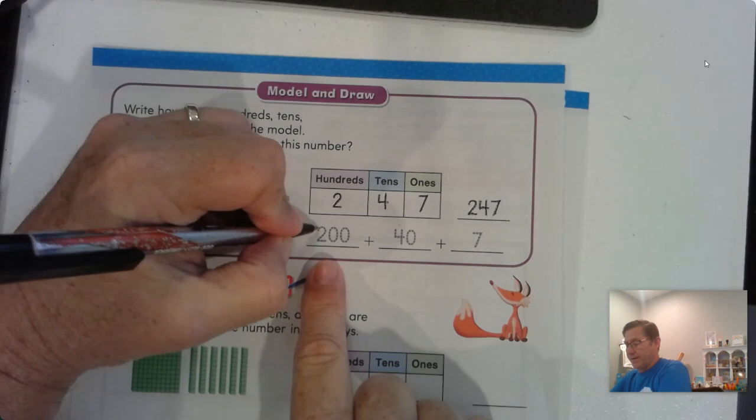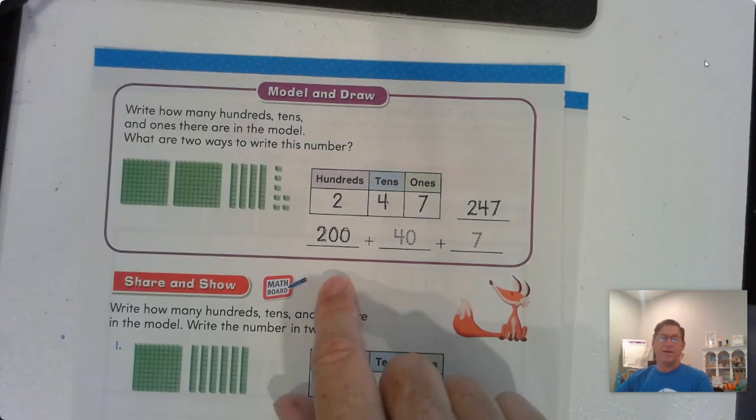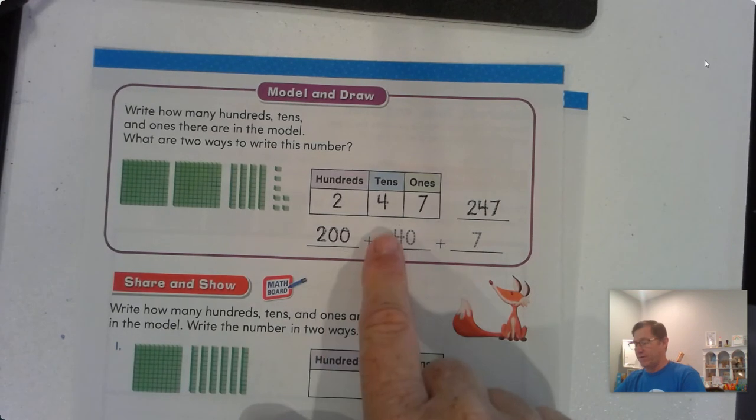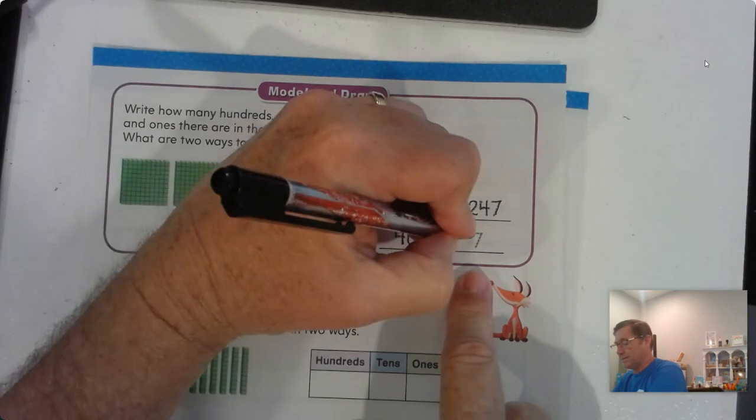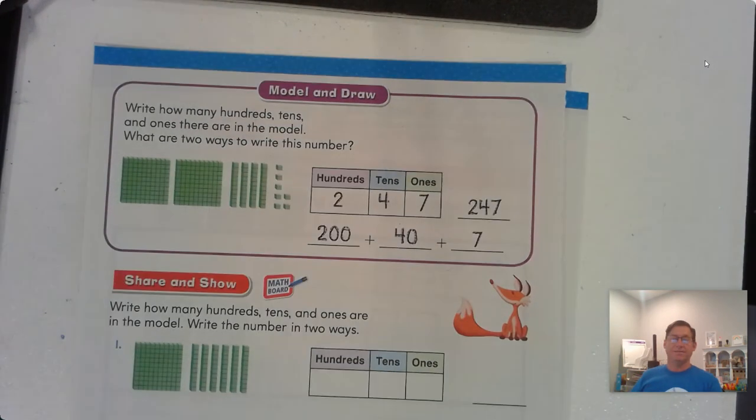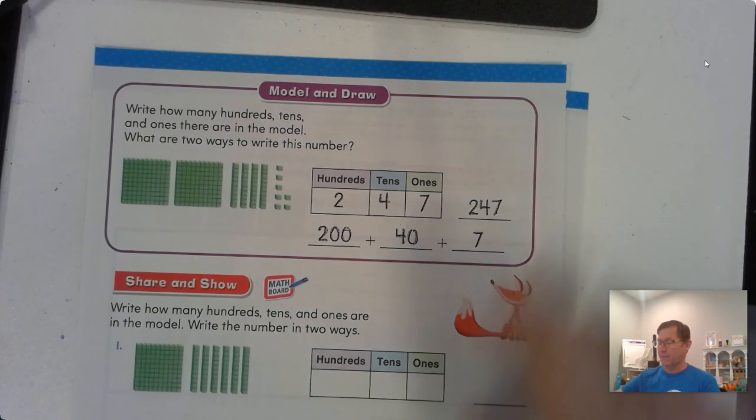We could also break it apart by its place value. How many hundred blocks did we have? We had 2, so that's 200. We had 4 tens, which would be 40, and we had 7 ones, which is 7. 247.